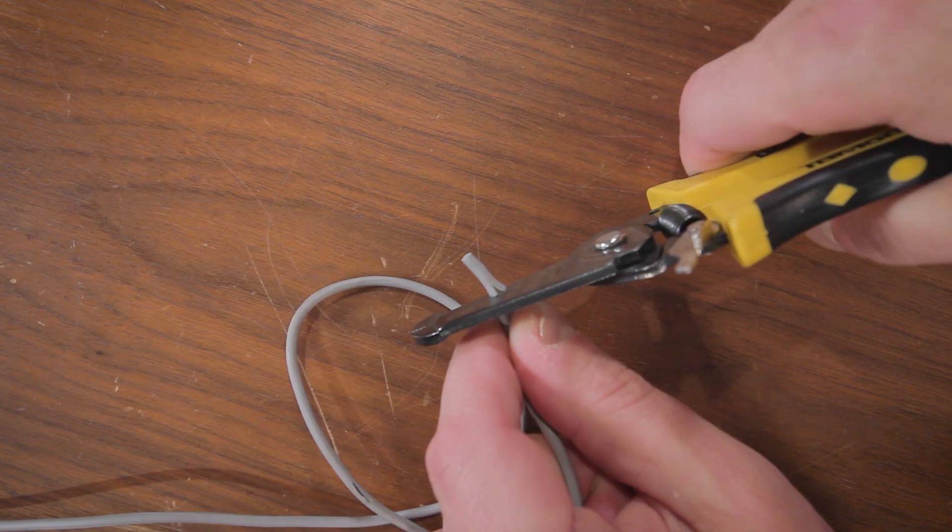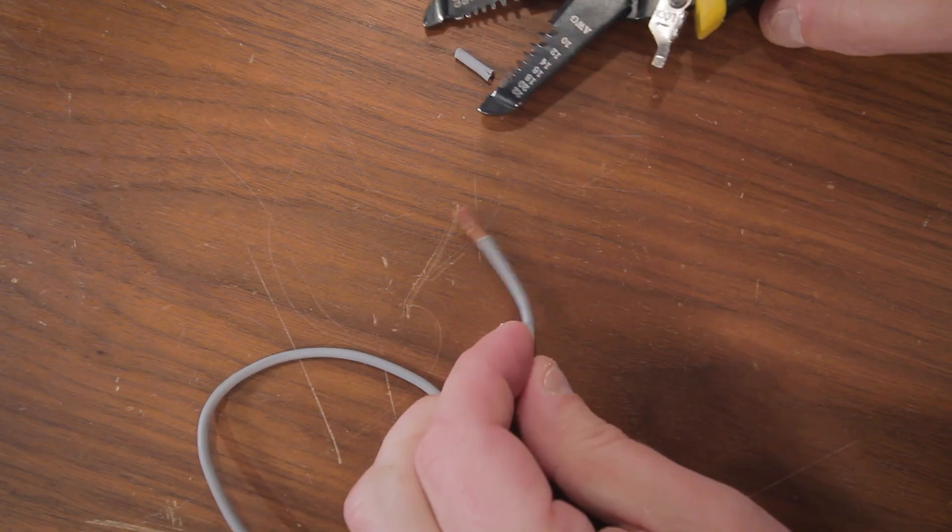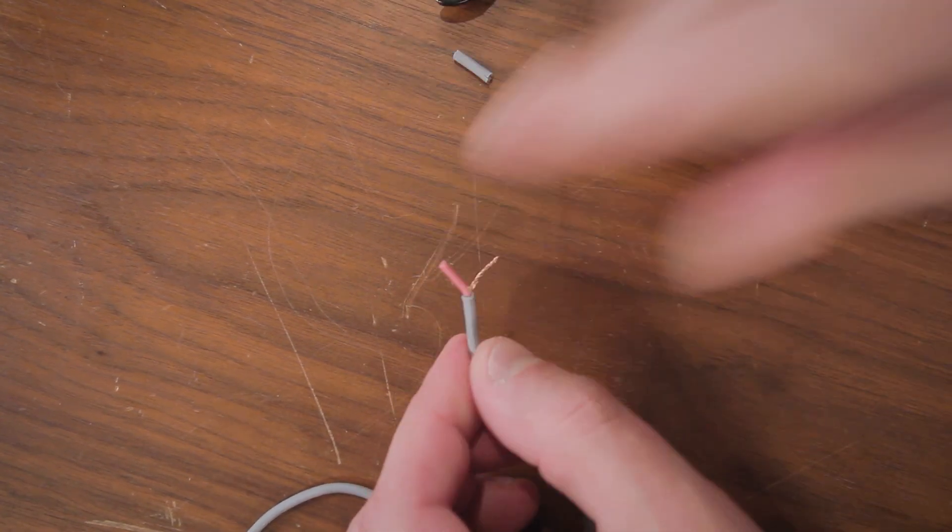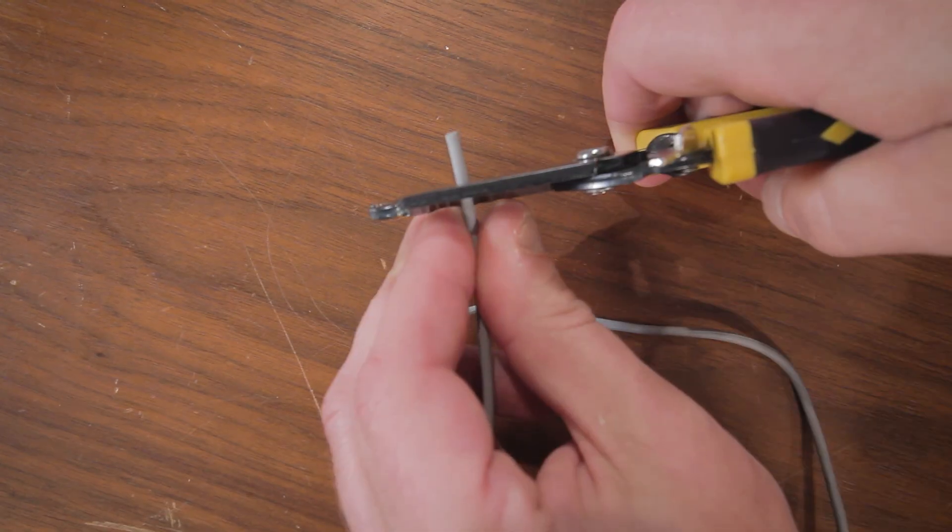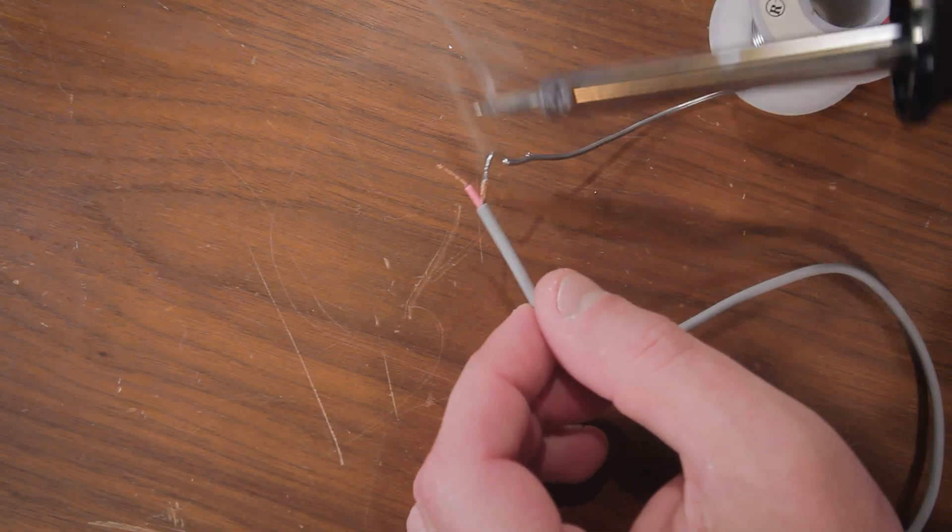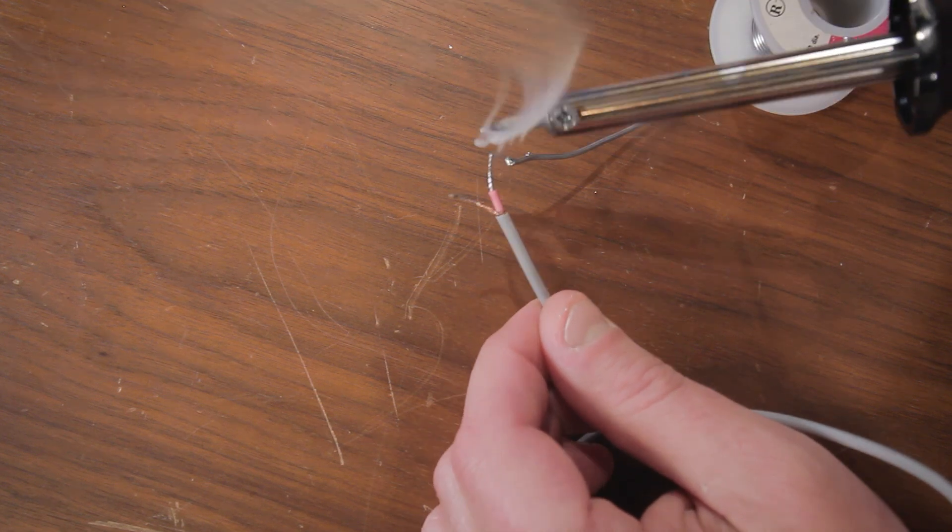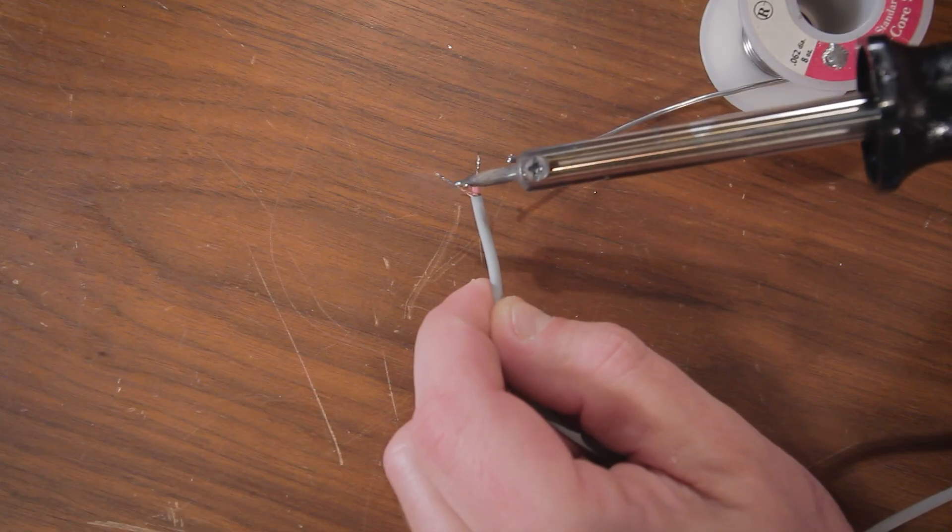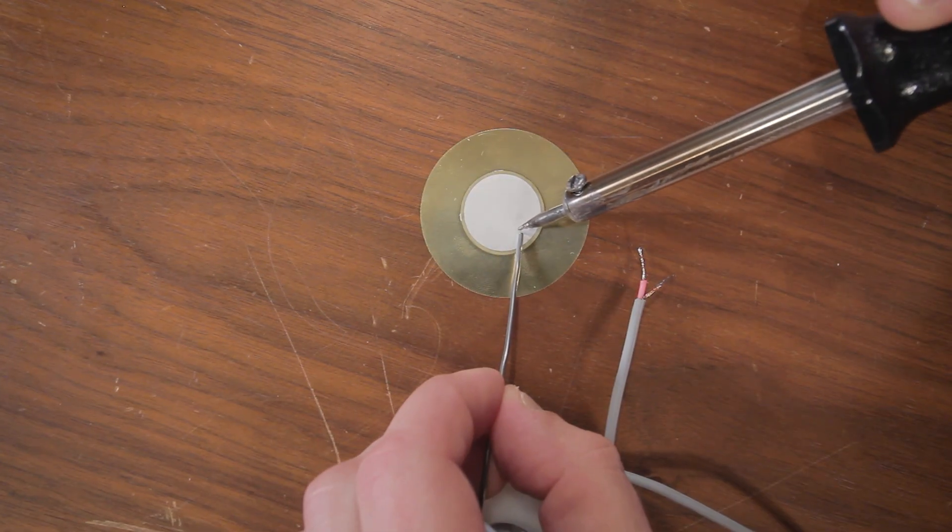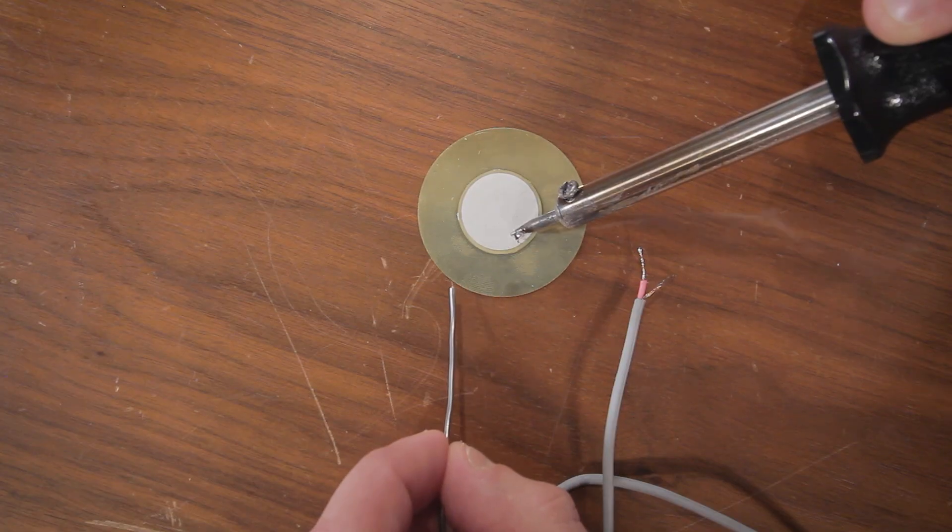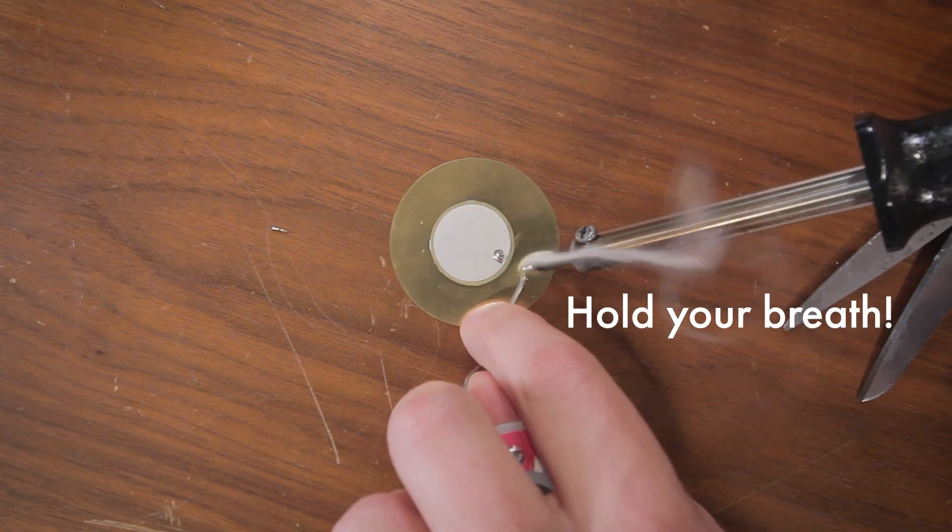So the first step is to strip away a bit of the casing from our wire. And then we're going to twist a bit of this shielding in the cable to use as a wire itself. And we do that same thing on both ends. Now to prepare your wires, you want to melt a bit of solder into them, which will give you a better connection when you finally solder them onto the elements. Now to prepare the piezo disc, you just melt a small dot of solder onto both the ceramic and the copper parts of the disc.